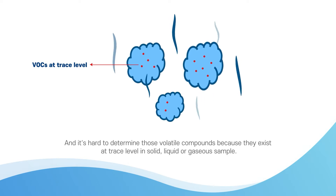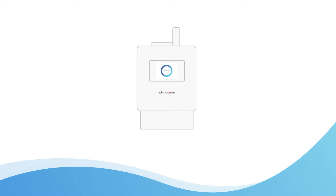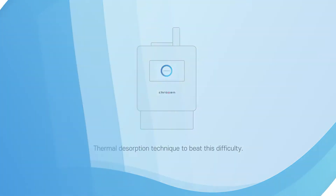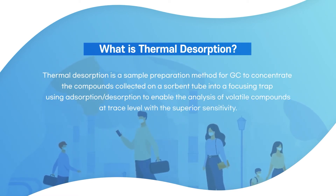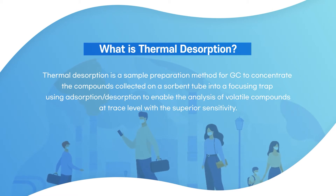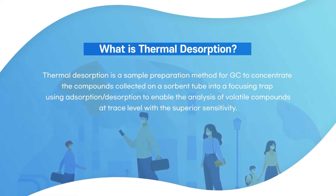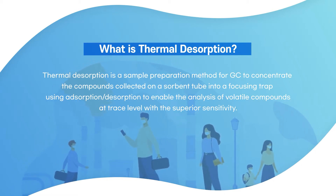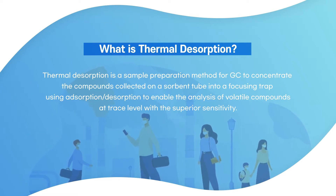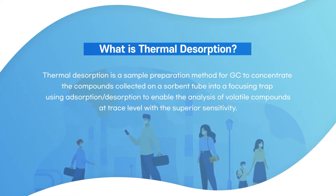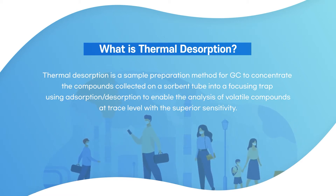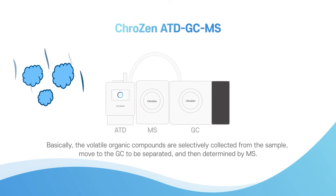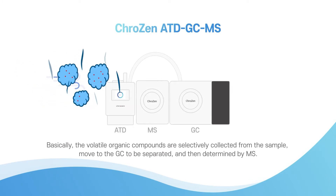and gaseous samples. Thermal desorption technique will beat this difficulty. Thermal desorption is one of the sample preparation methods for GC, to concentrate the compounds into a sorbent tube and a focusing trap using absorption and desorption, enabling the analysis of volatile compounds at trace level with superior sensitivity.